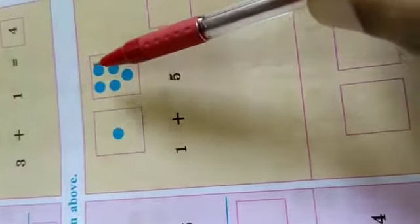1 plus 5. 1, 2, 3, 4, 5, 6. 6 dots total. Continue we have to count. 6.